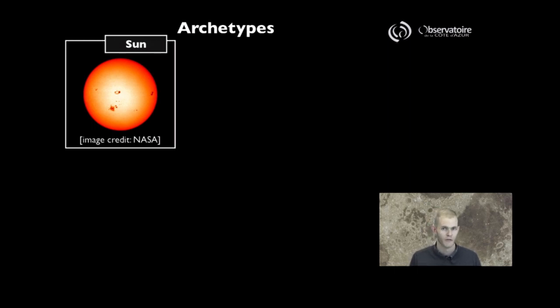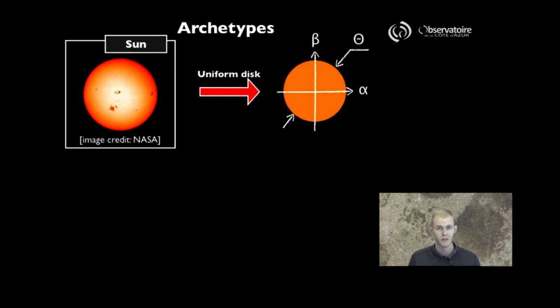One of the things we said about our sun was that we could build a pretty representative model by simply describing it as a uniform disk characterized by a single parameter, the angular diameter of the sun. This uniform disk is going to be one of the fundamental bricks.